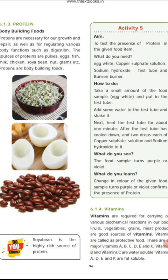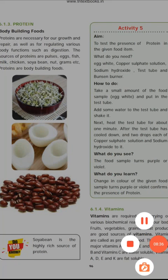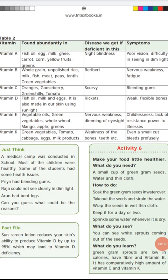In our book, deficiency diseases for each vitamin are listed. Vitamin A deficiency causes night blindness; vitamin B causes beriberi; vitamin C deficiency causes scurvy; vitamin D causes rickets; vitamin E causes nervous weakness and vision deterioration; and vitamin K causes weakness of the bones and teeth. You have to read the sources and symptoms in the table.